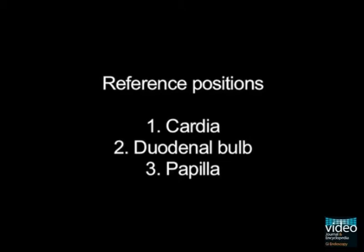In the upper abdomen, you have three important reference positions to identify the anatomical guiding structures: first, the cardia; second, the duodenal bulb; and third, the level of the papilla.